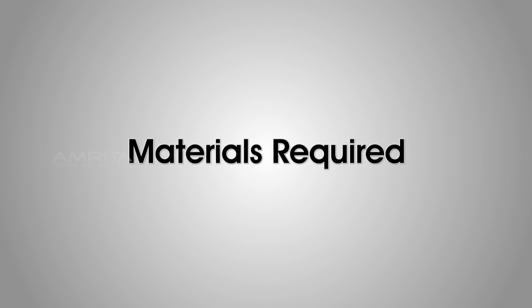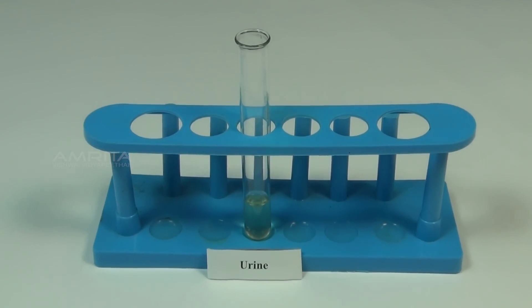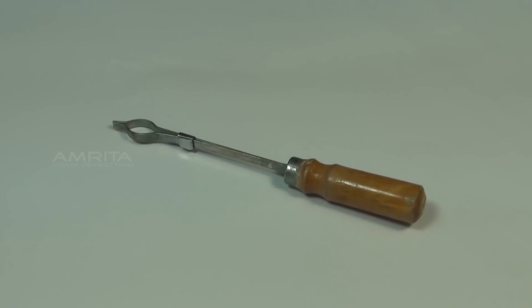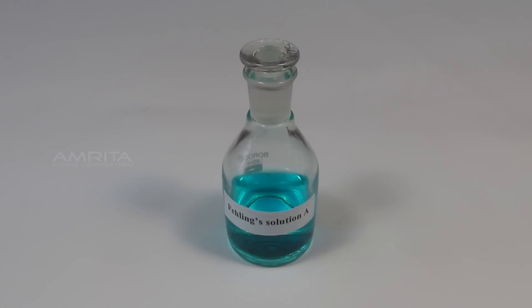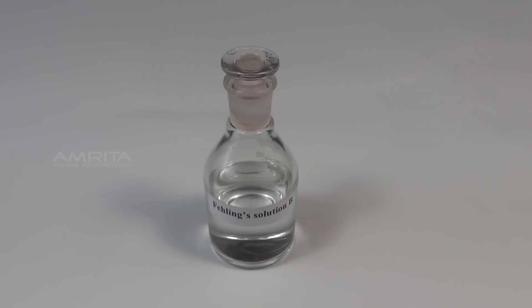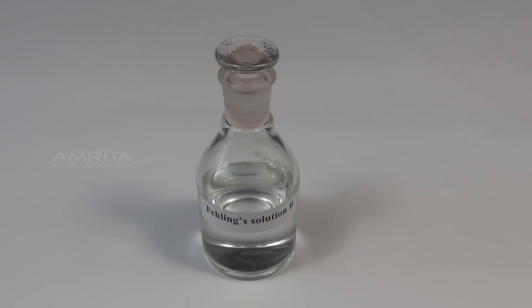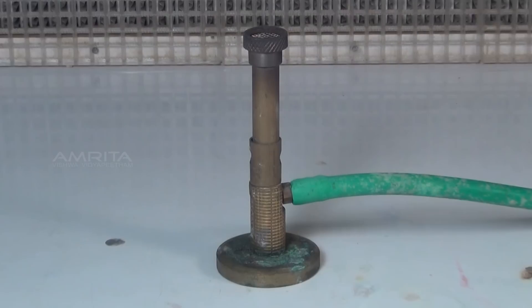Fehling's Test. Materials required: a urine sample in a test tube, a test tube holder, Fehling's solution A, Fehling's solution B, a dropper, and a burner.